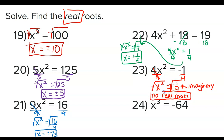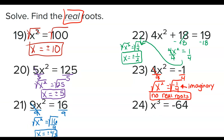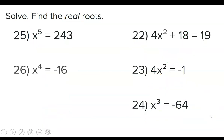Problem 24: x to the power of 3 equals -64. We cube root both sides to get rid of x cubed. I do not include the plus or minus because this is an odd root. This is not an imaginary number because it is a cube root — you only get imaginary numbers from even roots. So the cube root of -64 is -4, because (-4)×(-4)×(-4): negative times negative is positive, times negative gives negative.